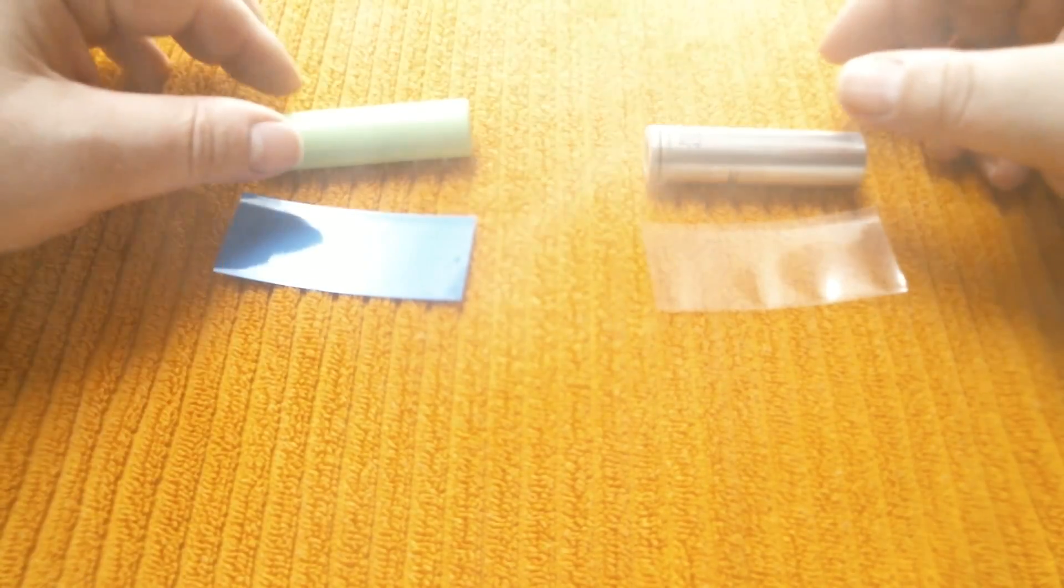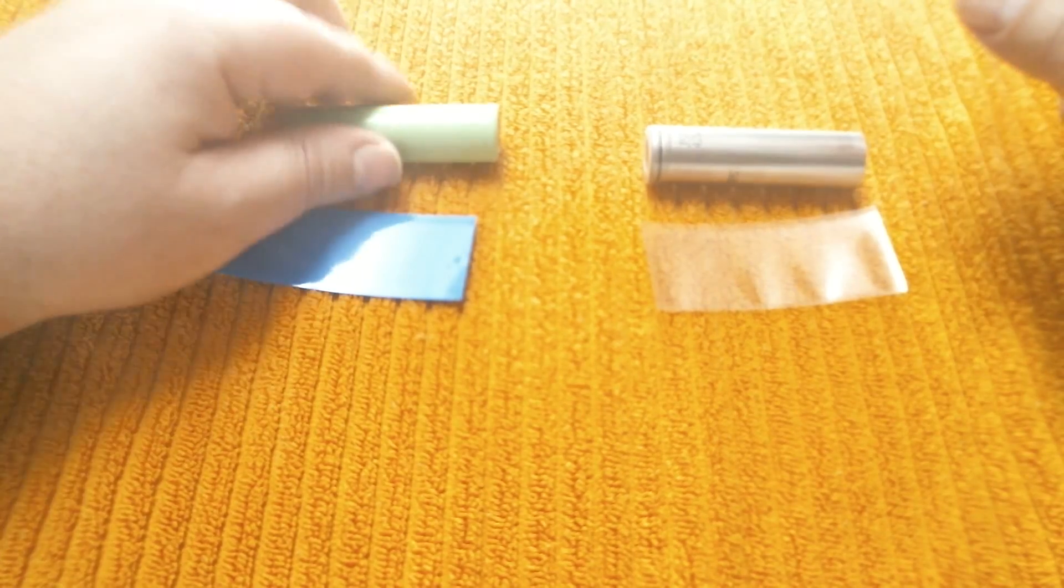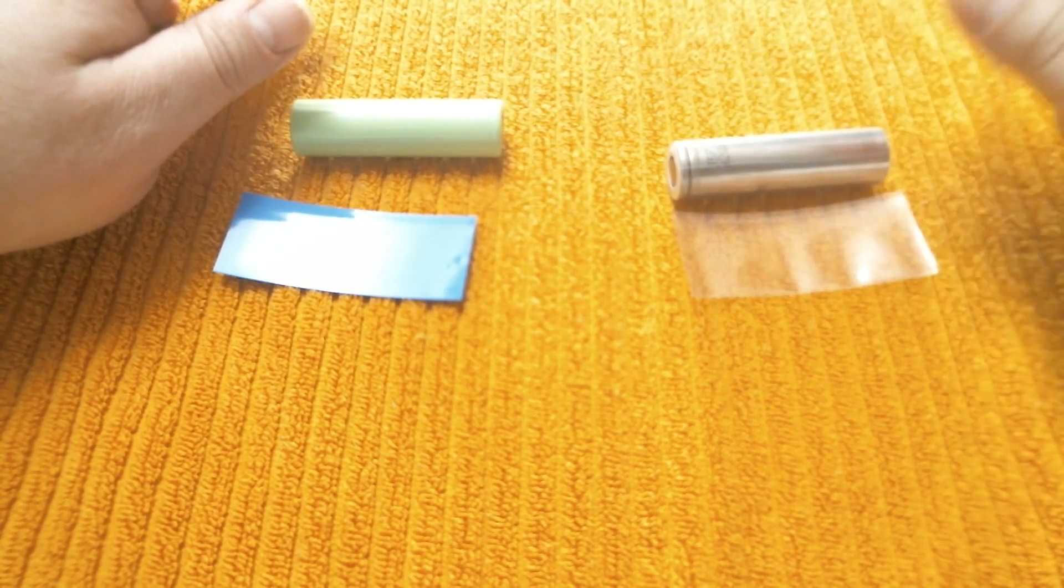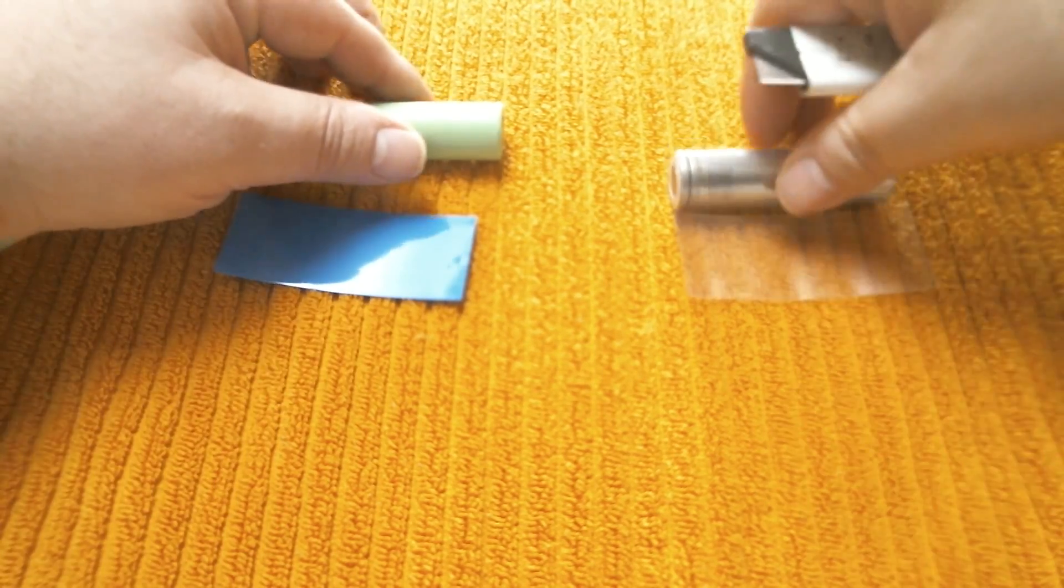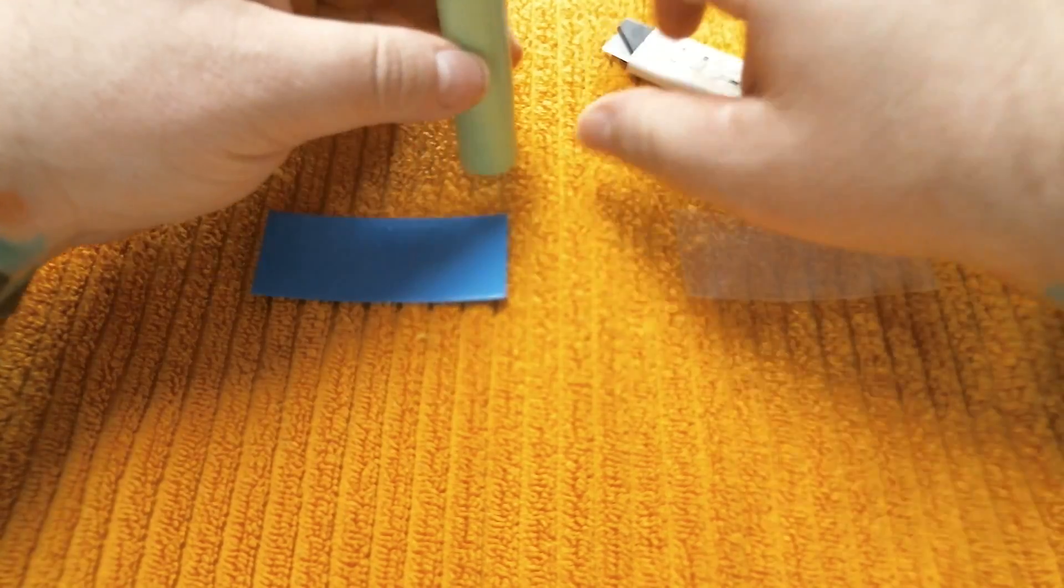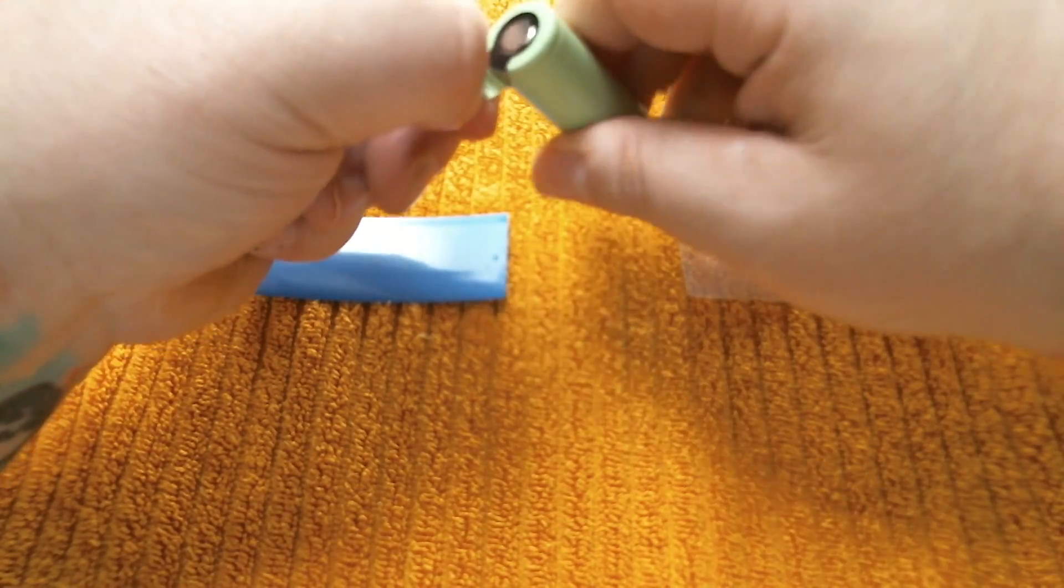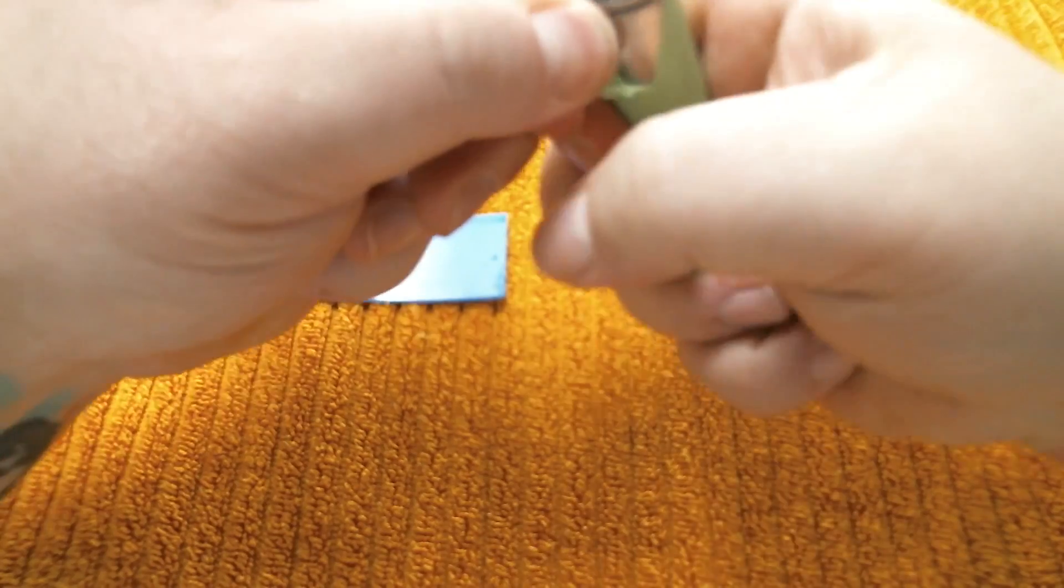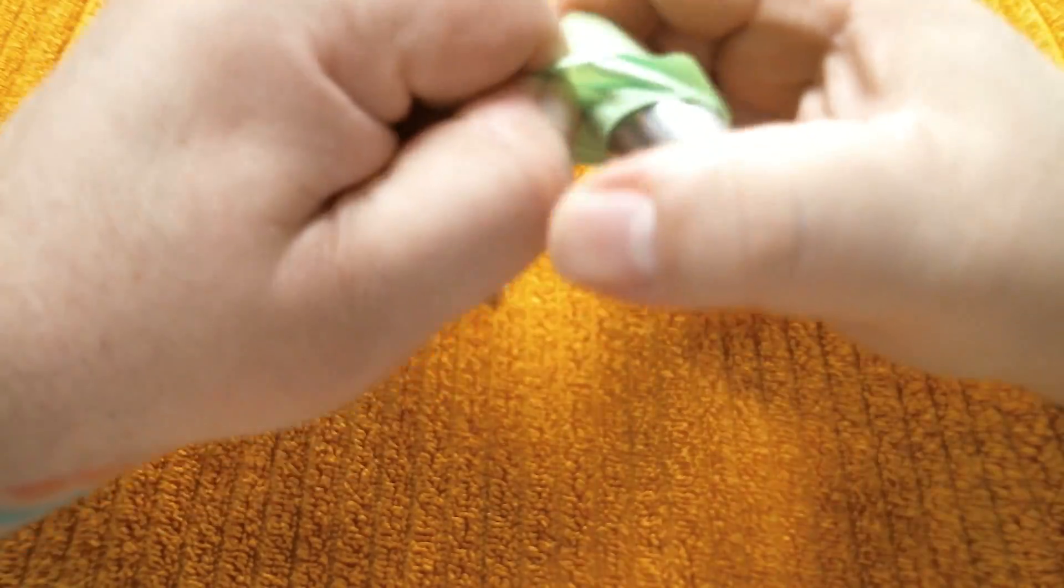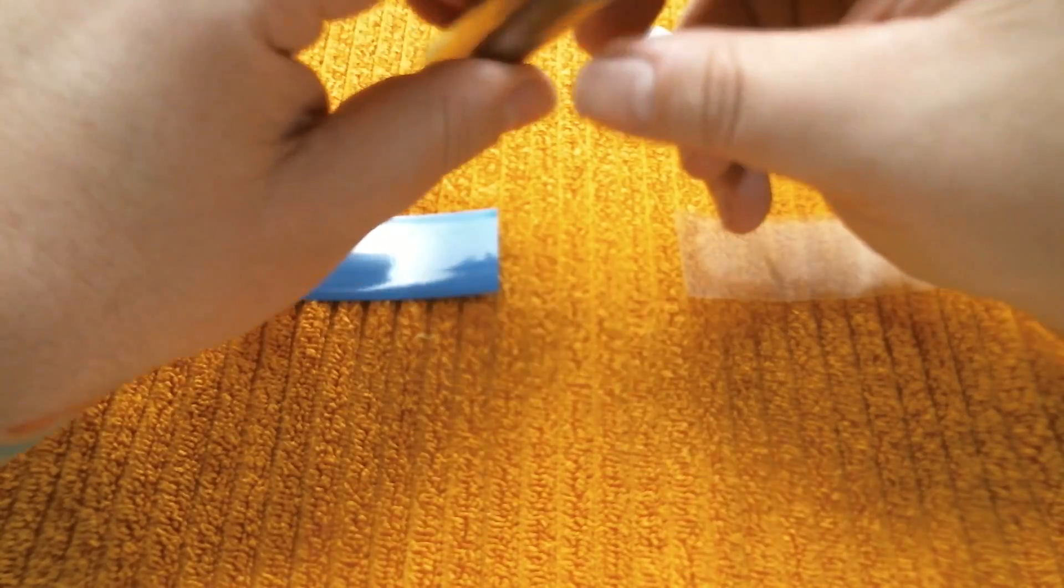All right folks, so change of plans here. I had rewrapped this guy, that was the eFest. Here's a Samsung. I want to show you guys the difference between wrapping the two of them, so I'm just gonna cut open the eFest. All these battery wraps come off real easy.